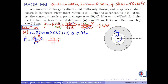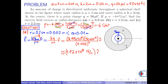Now we insert the numerical values into this formula. We obtain approximately 1.12 times 10 to the 11 newtons per coulomb R-hat, which can be shown in the figure as follows.